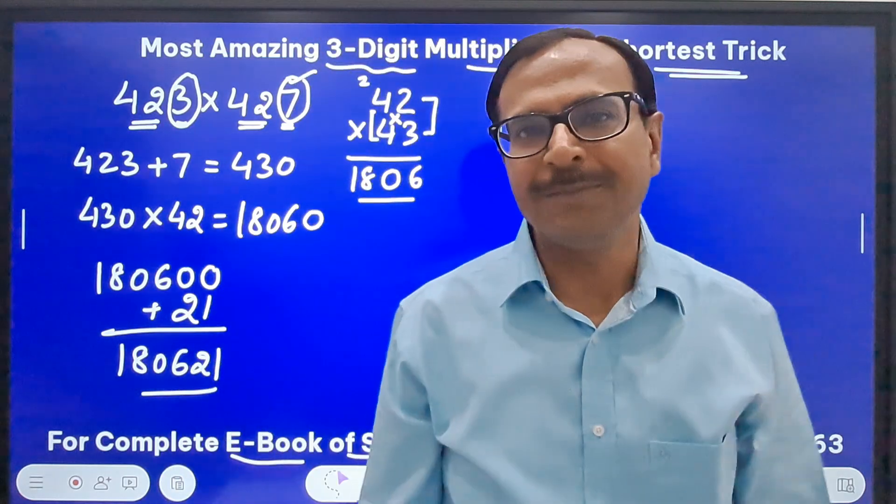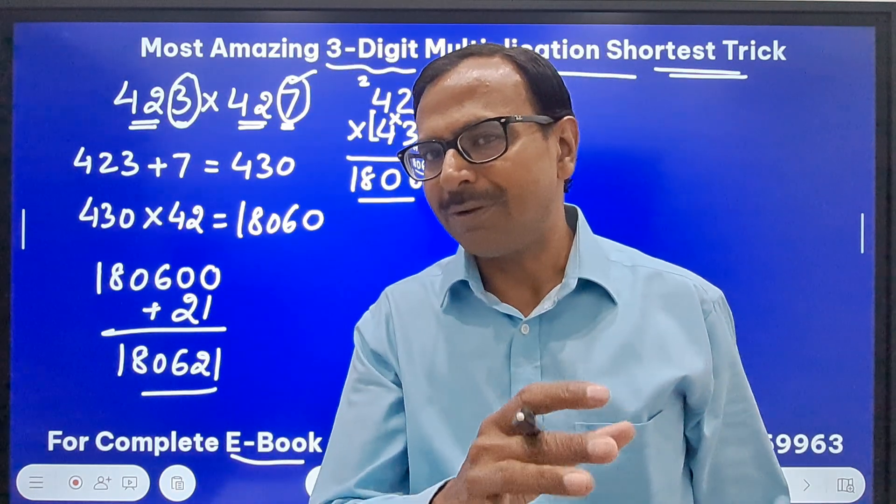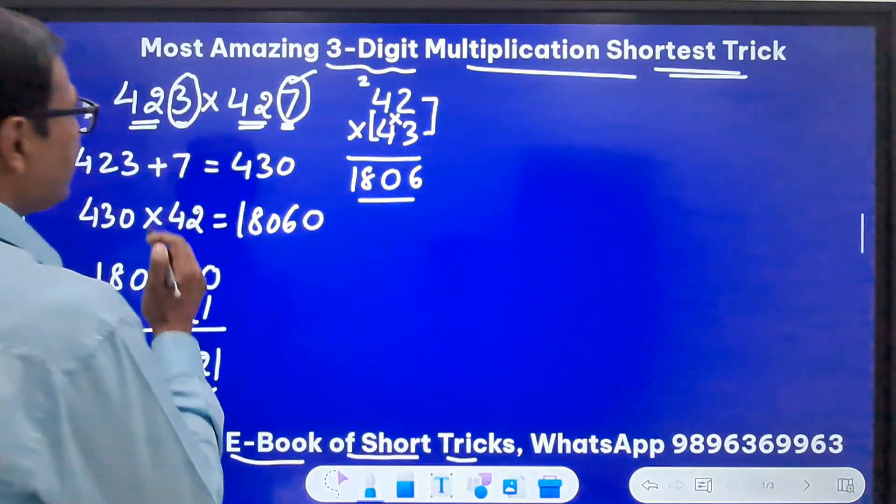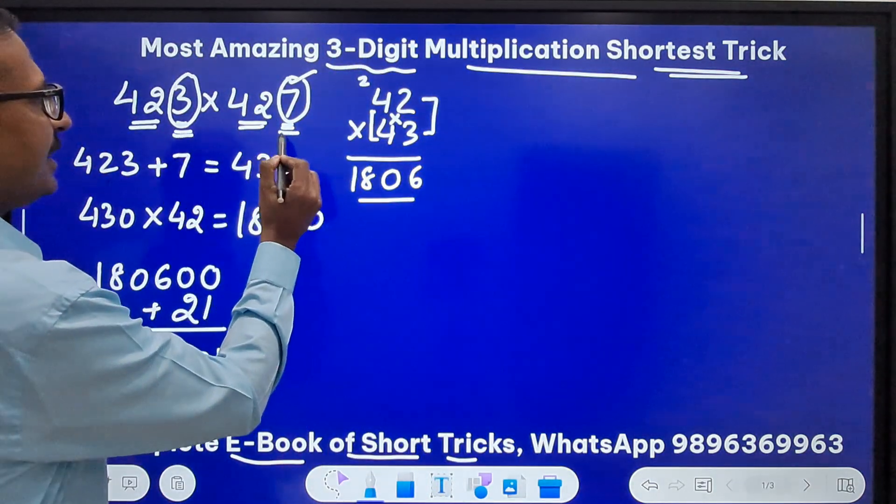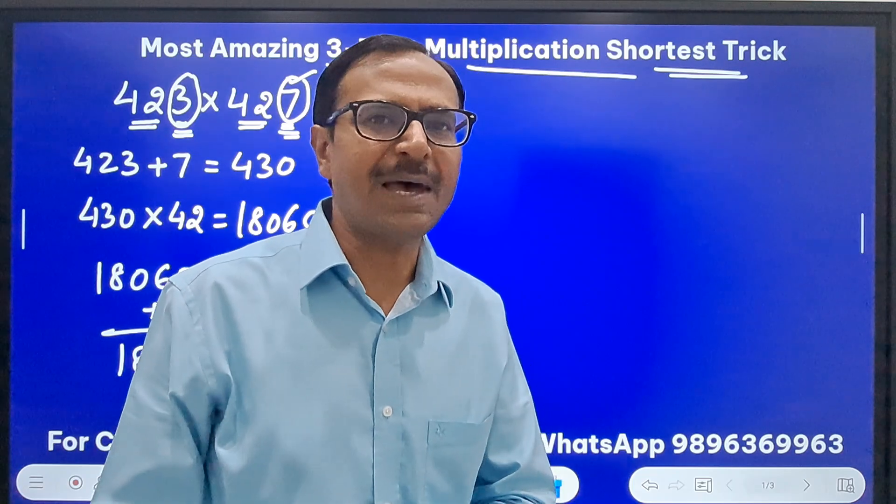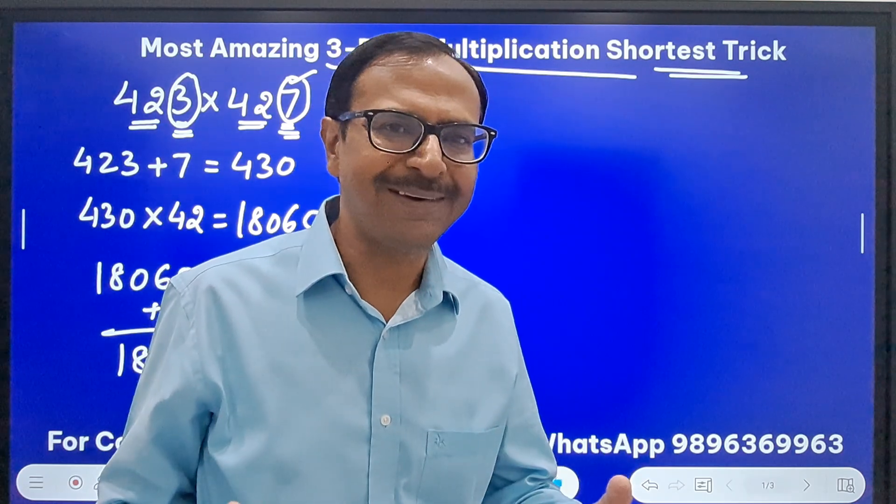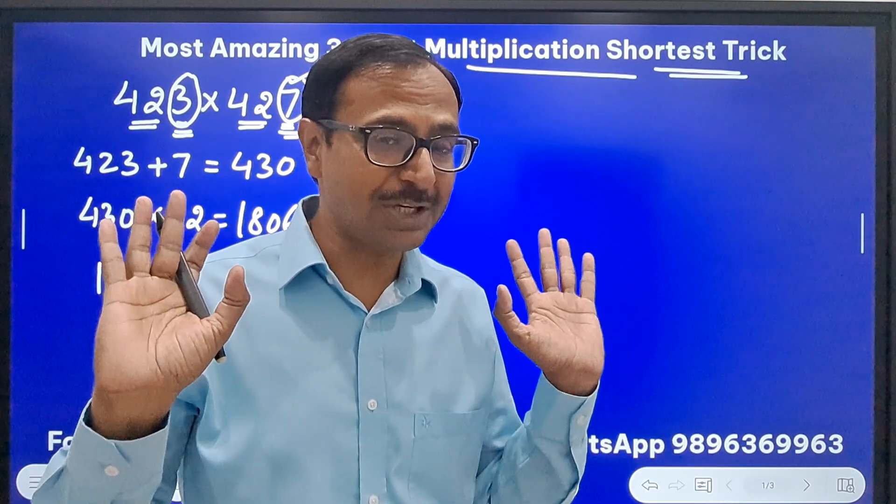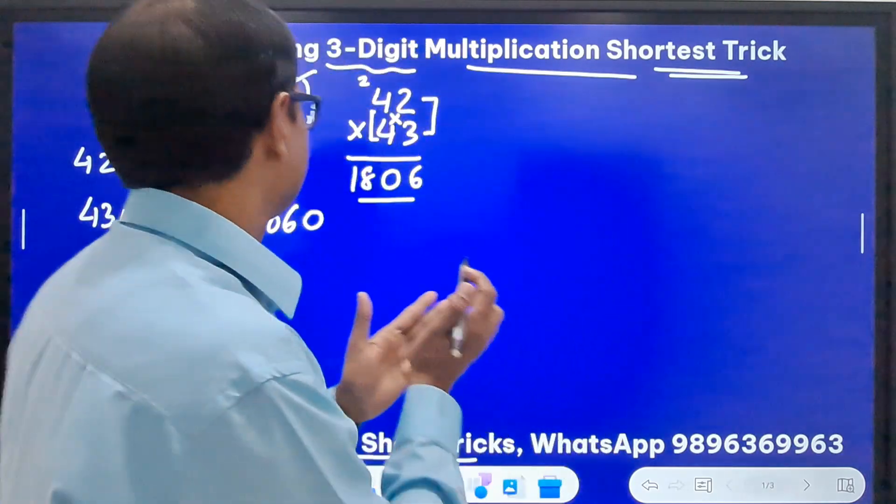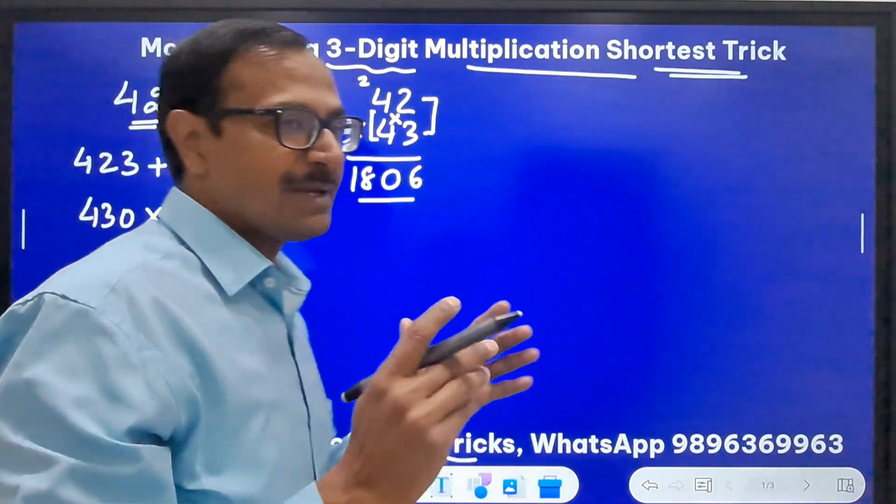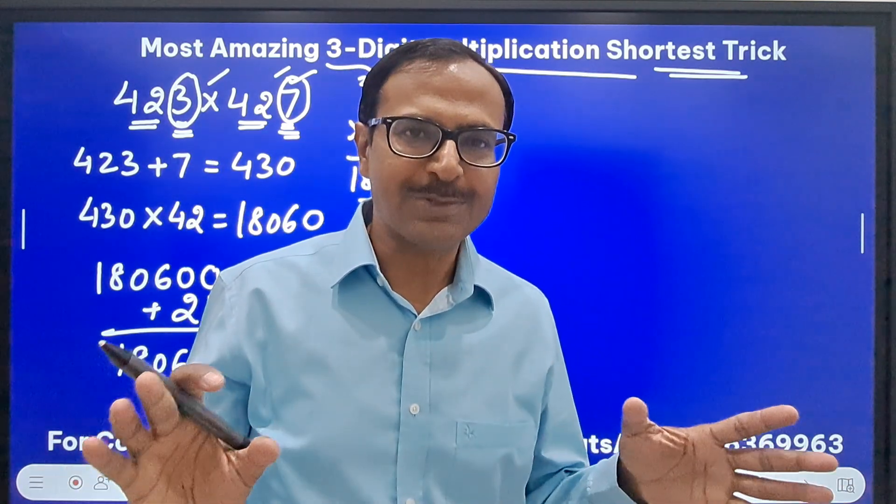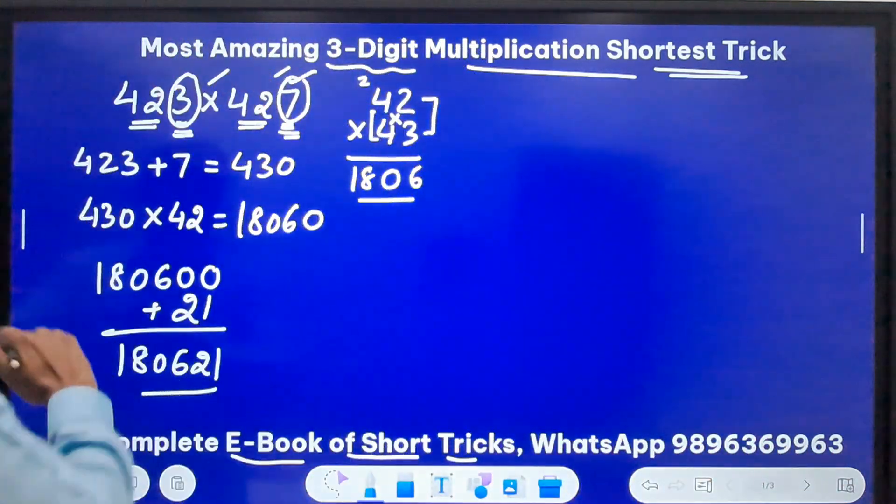180621 is the product of 423 and 427. It works wonderfully well but I have something special, one more special thing. Watch. The numbers here are 3 and 7 right, the unit digits, and they add up to 10. And whenever this happens you have another short trick. But I am not going to restrict it to the numbers ending in 3 and 7, that means the numbers adding to 10.